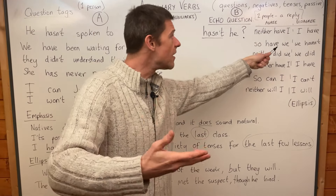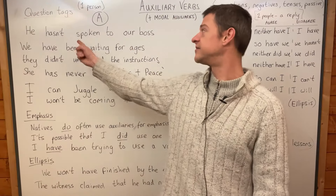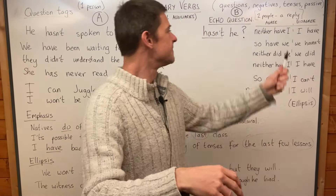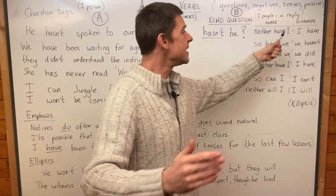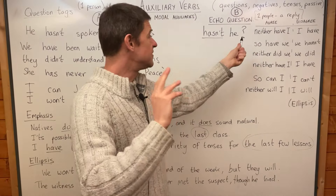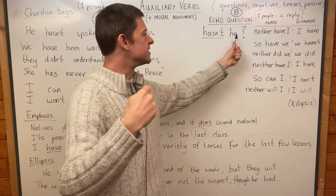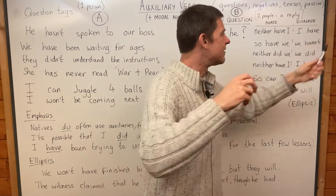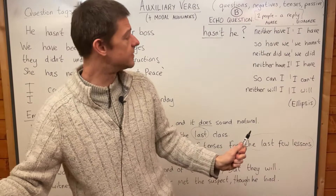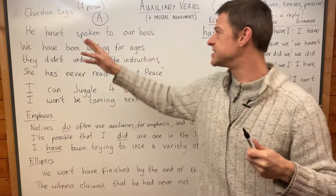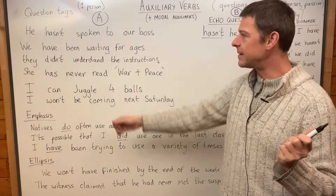If you want to say that you also haven't spoken to the boss, you say 'Neither have I.' So person A says 'He hasn't spoken to our boss,' and person B says 'Hasn't he? Neither have I.' Or maybe person B has spoken to the boss, in which case they say 'Hasn't he? I have' — meaning 'I have spoken to the boss.'